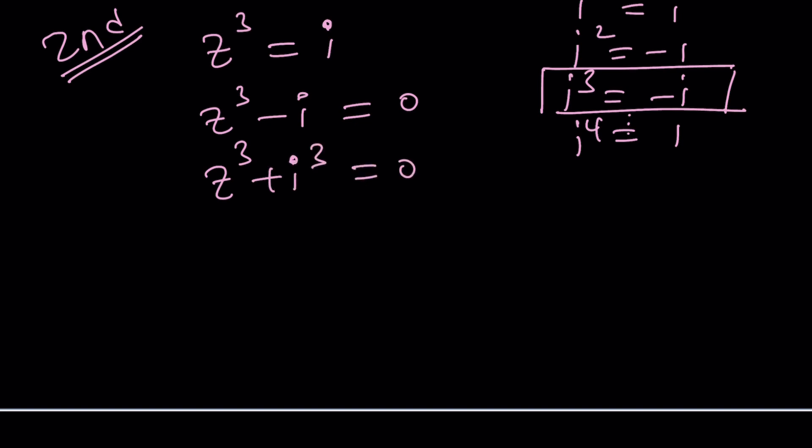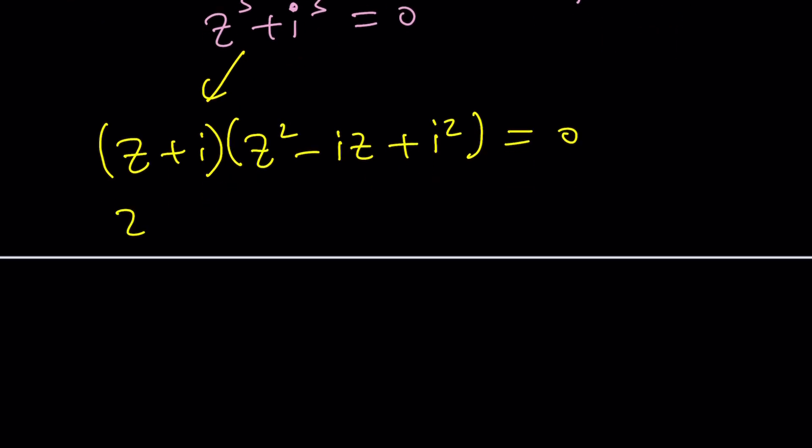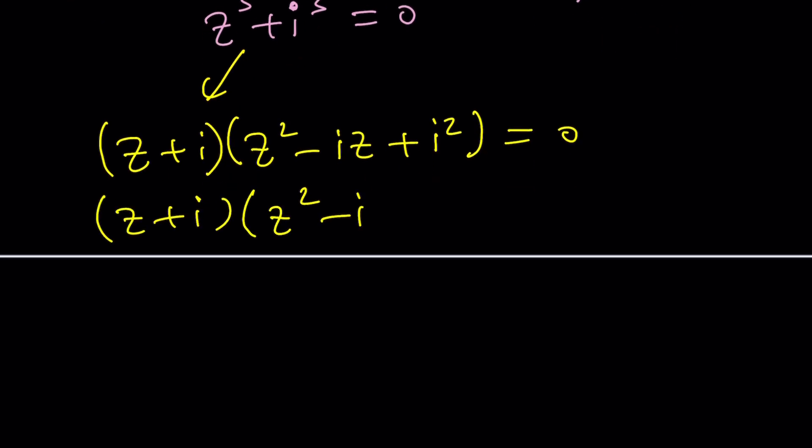Guess what that becomes? The sum of two cubes, which can be factored: (z + i)(z² - iz + i²). Remember the formula. Let's just write it as i². Let's not skip any steps. And then from here, (z + i)(z² - iz - 1) = 0. Awesome. We're going to solve for z. This one gives us z = -i, which is one of the solutions, obviously, which we found with the first method.